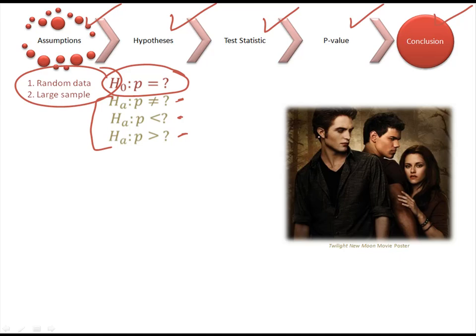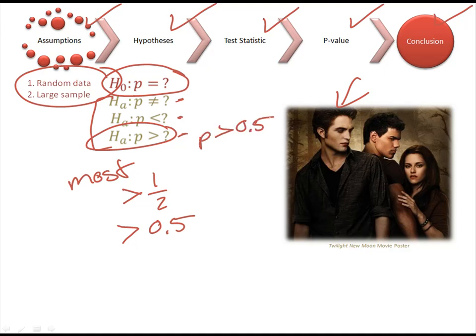In our particular scenario, the thing we want to prove is that most Twilight fans prefer Team Edward. The way we're going to prove that most, most means more than half, so greater than half, well that's the same thing as greater than 0.5. So our proportion of people is going to be greater than, so we're going to use this, and it's going to be p greater than 0.5. That's our alternative, that's the thing we want to prove.